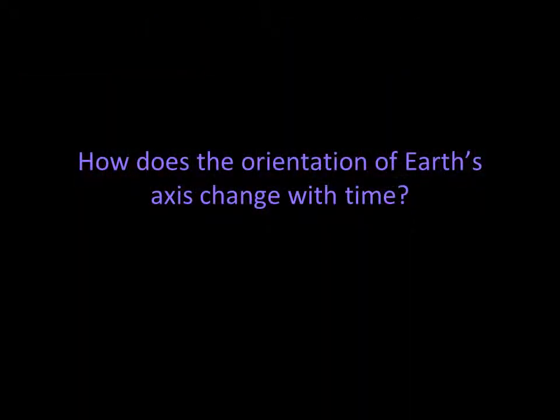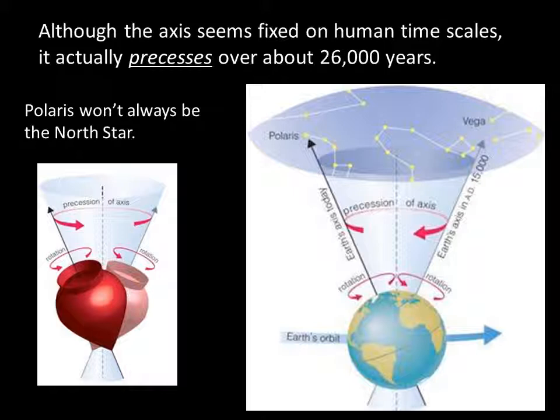Besides the daily rotation of Earth and its yearly revolution around the sun, there's another motion of our planet that we haven't talked about — this one just takes a bit longer. The movement is called precession, and it's the gradual wobble of Earth's axis. Precession is caused by gravity's effect on a tilted rotating object that is not a perfect sphere. You've probably seen this effect if you've ever spun a top and watched it wobble.